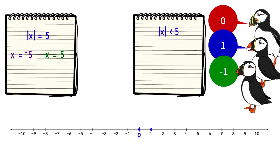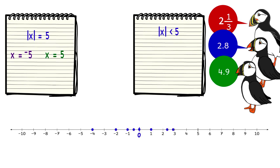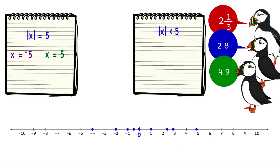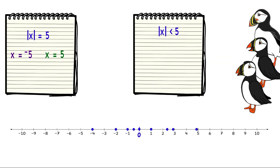1, negative 1, negative 2, negative 4, negative 1 half, 2 and 1 third, 2.8, 4.9. But did we write all the possible solutions? No. While 5 and negative 5 are not solutions, 4.9999 is.